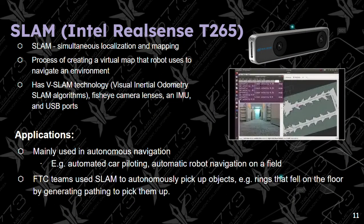The last sensor we'll be talking about is SLAM, using the Intel RealSense T265 camera. SLAM stands for Simultaneous Localization and Mapping. It is used for creating a virtual map that the robot uses to navigate in an environment or field. It features SLAM technology, visual inertial odometry SLAM algorithms, fisheye camera lenses, an IMU, and a USB port. It is mainly used for autonomous navigation, the period where humans can't control the robot and it must make its own decisions. Applications include autonomous robot navigation on a field — for example, an FTC team used SLAM to autonomously pick up objects like rings on the floor by generating a path to pick them up.